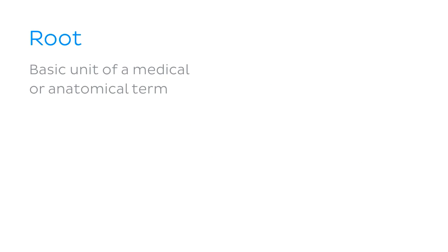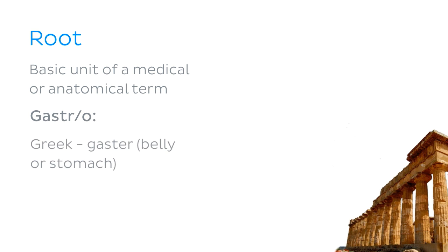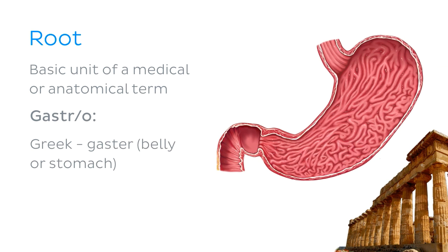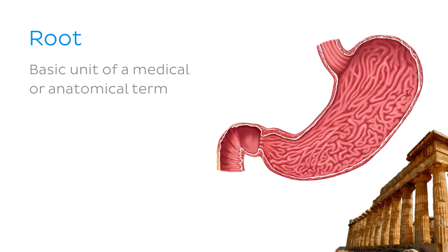First up, we have the root of a term, which is the basic unit of a medical or anatomical term. For example, 'gastro' — with or without the 'o' at the end — comes from the Greek word for belly or stomach, 'gaster.' It refers to the primary structure or body system that the term is related to.